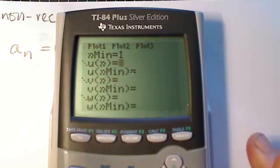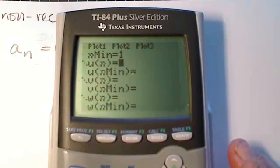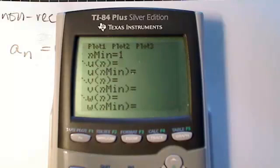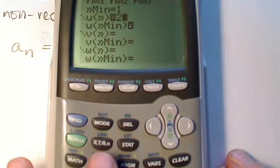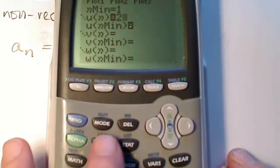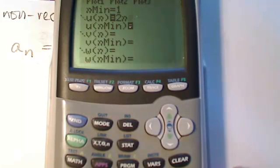Now look how it always had y before. Now it shows you that you're doing u of n. That's the same thing as a sub n. So our formula was 2n. Now look down to your x, t, theta, n button. When you push that button, it puts an n in there for you. So we have 2n minus 11.